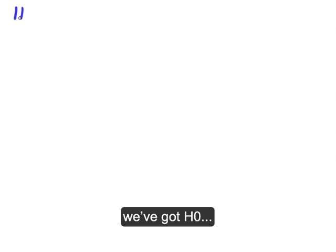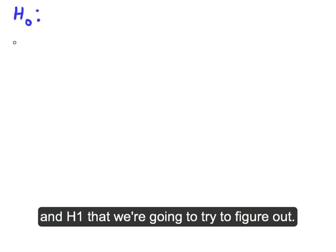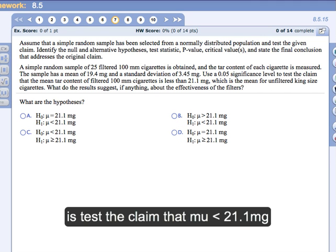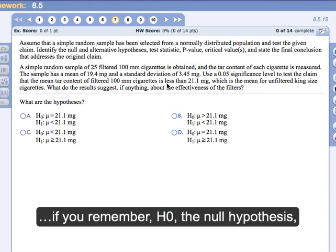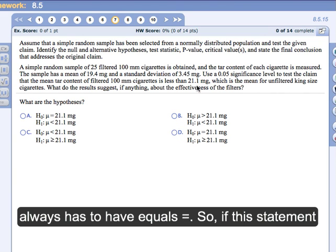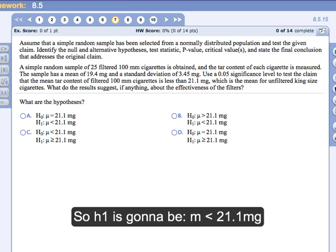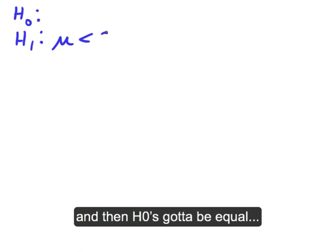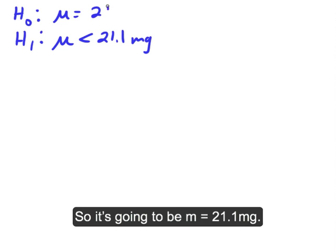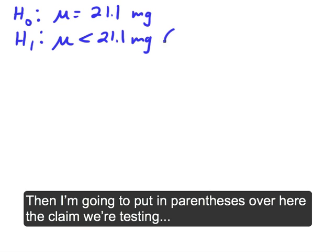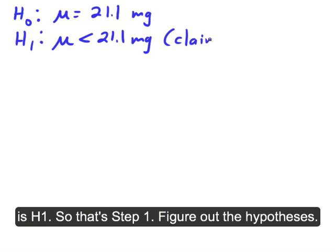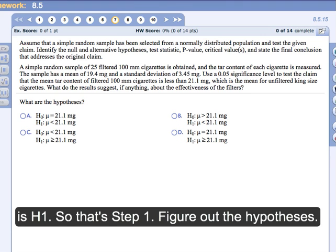So we've got H0 and H1 that we're going to try to figure out. Notice that the test you wanted to do is test the claim that mu is less than 21.1. If you remember H0, the null hypothesis always has to have equals. So if this statement is mu is less than 21.1, that's got to be H1. So H1 is going to be mu is less than 21.1 mg, and then H0 has got to be equal. So it's going to be mu equals 21.1 mg. And then I'm going to put in parentheses the claim we're testing is H1. So that's step one, figure out the hypotheses.